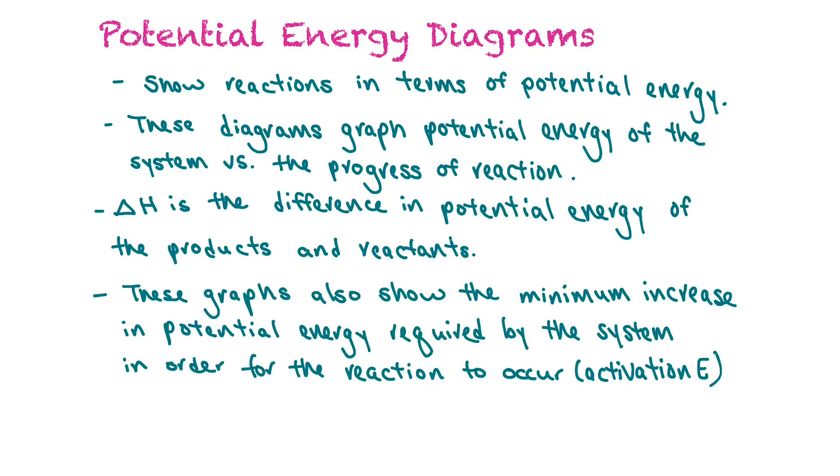The final way of representing energy equations would be potential energy diagrams. These would show the reactions in terms of potential energy. These diagrams graph the potential energy of the system versus the progress of the reaction. The delta H would be found as the difference in potential energy of the products and the reactants. These graphs also show the minimum increase in potential energy that's needed by the system in order for the reaction to occur. This is known as the activation energy.